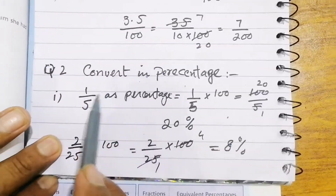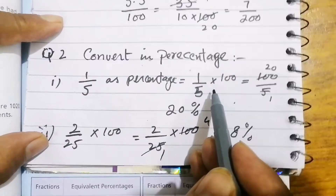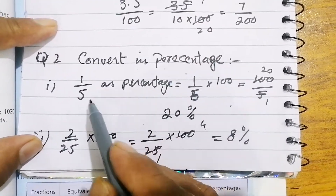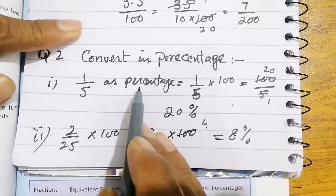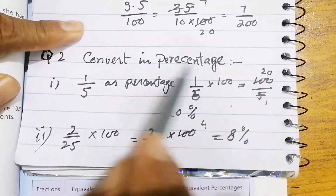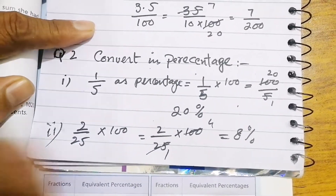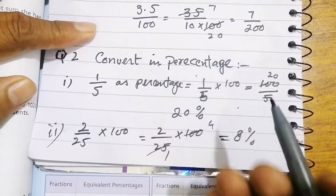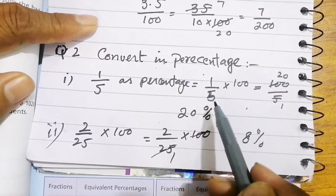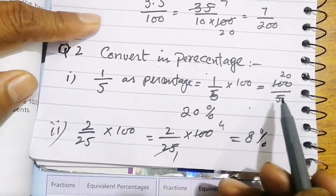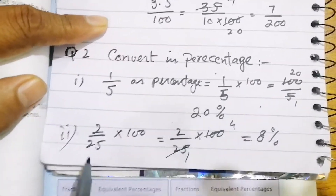The first fraction given is 1 over 5. When we convert a fraction into percentage, we multiply by 100. When converting percentage to fraction we divide by 100; here we multiply. So 1 over 5 multiplied by 100 — cancelling 5 into 100 gives 20 — equals 20 percent.